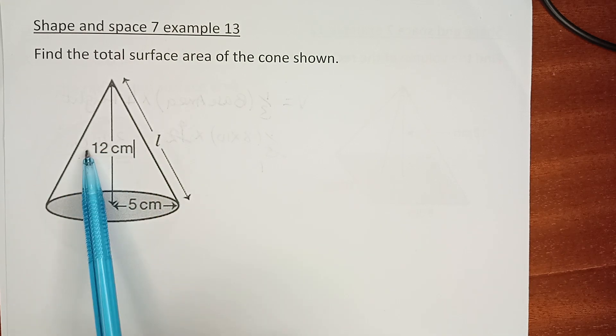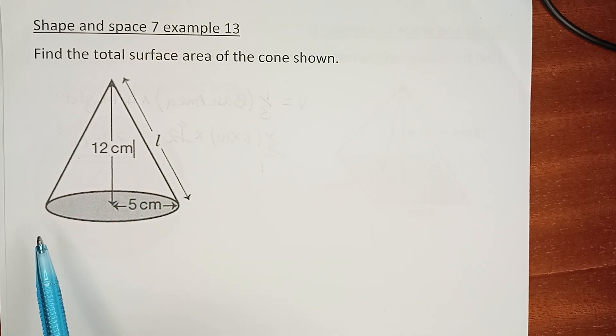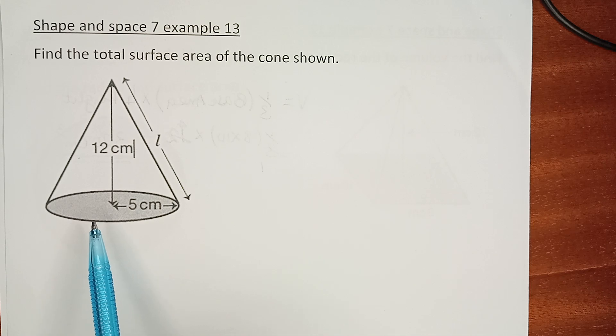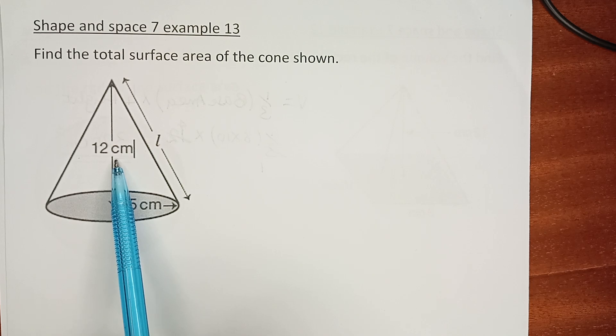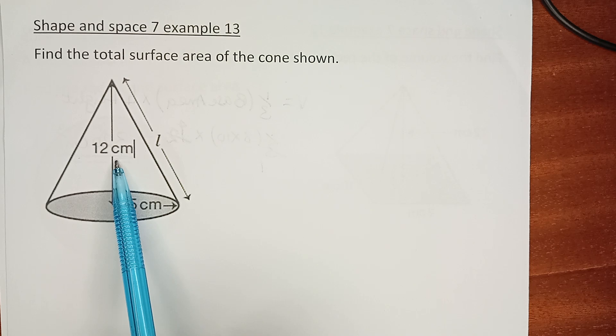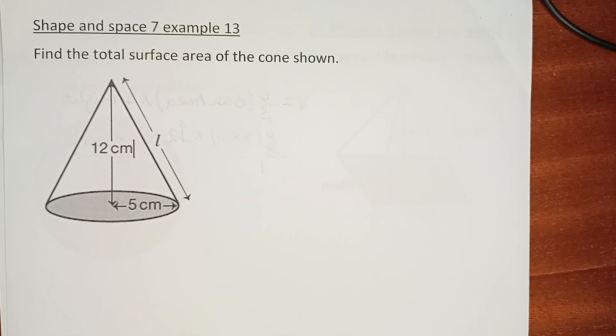If the base is closed then it is circular, and we have to calculate the area of that circle plus the area of the curved surface. So find the total surface area of the cone shown, and by extension we may also find the volume.